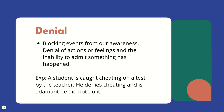Denial: blocking events from our awareness — the denial of actions or feelings and the inability to admit something has happened. In denial, we are denying that some sort of external stimuli has even occurred; we can't even admit to ourselves that something happened. This is very common amongst children and adolescents. Example: a student is caught cheating on a test by the teacher, and in denial, the response is, 'It was not me, I didn't do it.'